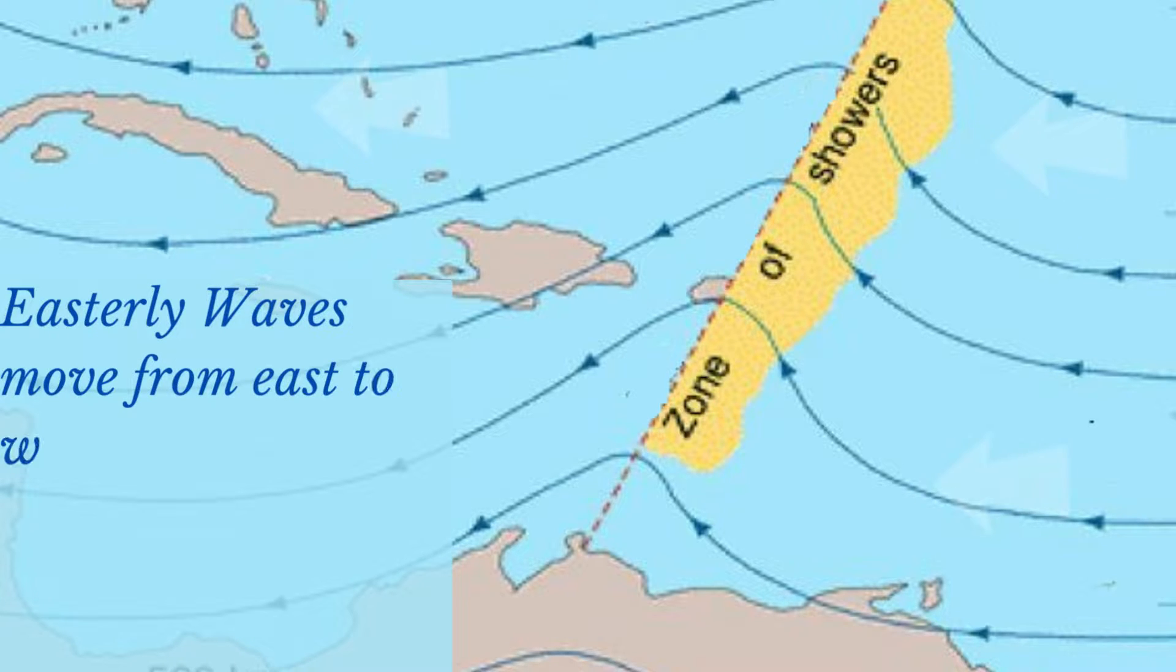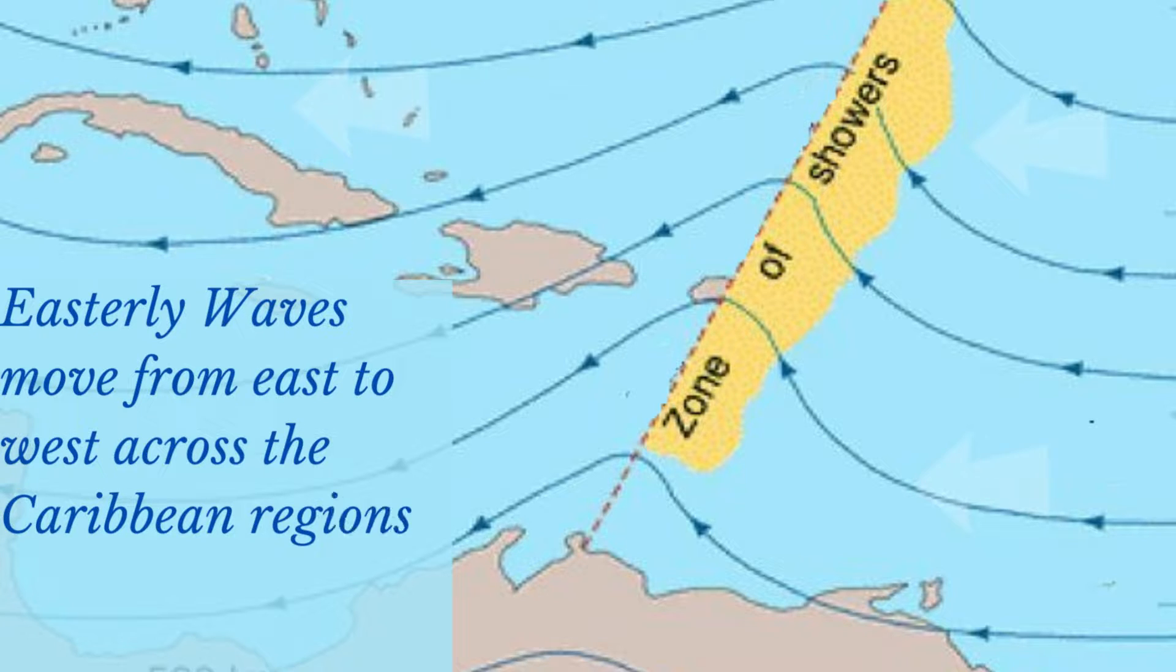Tropical waves are large-scale systems of up to 2,000 kilometers across. They move from east to west across the Caribbean at speeds of about 20 to 35 kilometers per hour.